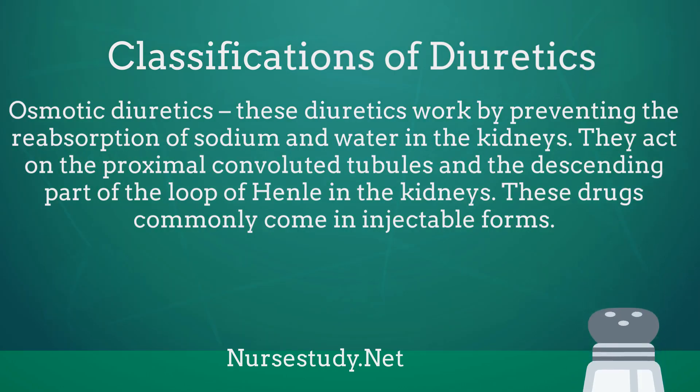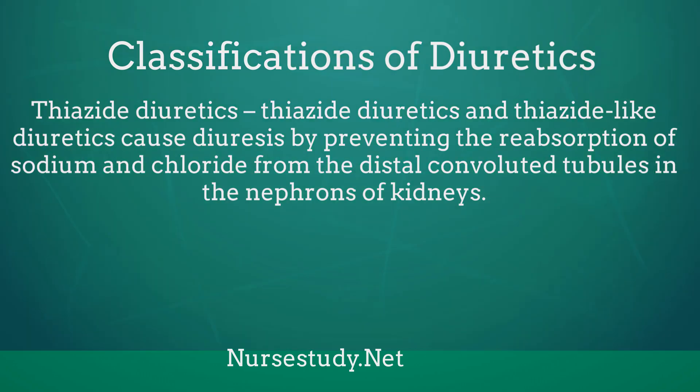Osmotic diuretics work by preventing the reabsorption of sodium and water in the kidneys. They act on the proximal convoluted tubules and the descending part of the loop of Henle in the kidneys. These drugs commonly come in injectable forms. Thiazide and thiazide-like diuretics cause diuresis by preventing the reabsorption of sodium and chloride from the distal convoluted tubules in the nephrons of the kidneys.